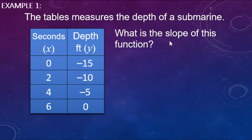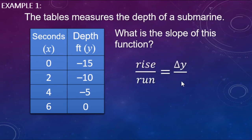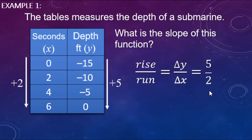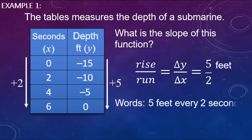If we're looking at slope only, it's the same thing: rise over run — the change in Y's over the change in X's. For the Y's, depth goes up by fives: negative 15 to negative 10 to negative 5 to 0. The run, the X's, goes 0, 2, 4, 6 — up by twos. So slope is 5 over 2, which is 5 feet every 2 seconds, or a unit rate of 2.5 feet per one second.